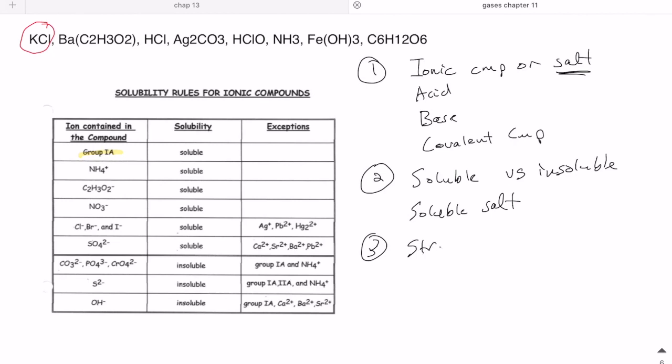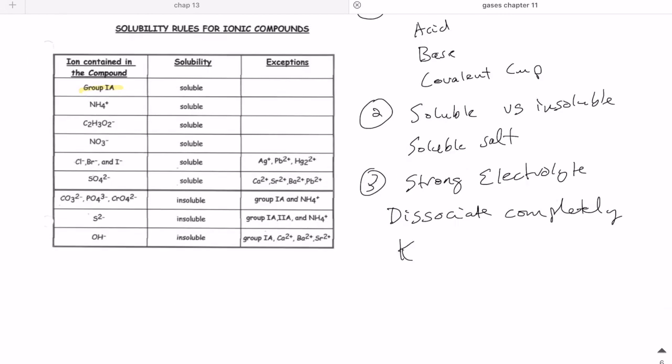A soluble salt is a strong electrolyte. A strong electrolyte always will dissociate completely. Then KCl when I put it in water will not appear as KCl but what I would see would be K+ and Cl- ion.